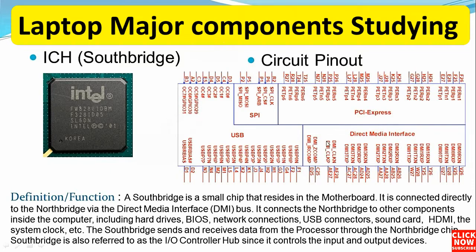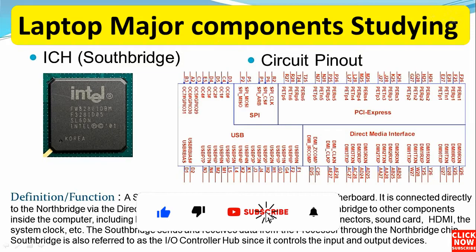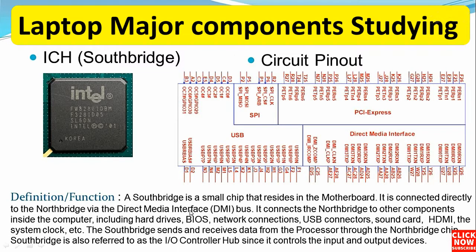We also have the USB controller, because the ICH controls all ports on the motherboard including USB ports, Gigabit Ethernet, HDMI, etc. As a definition, the South Bridge is a small chip that resides in the motherboard. It is connected directly to the North Bridge via the DMI or Direct Media Interface. It connects the North Bridge to other components inside the computer including hard drives, BIOS, network connections, USB connectors, sound card, HDMI, the system clock, etc. The South Bridge sends and receives data from the processor through the North Bridge chip.